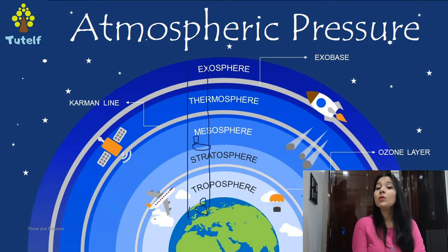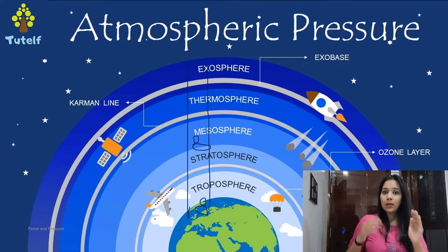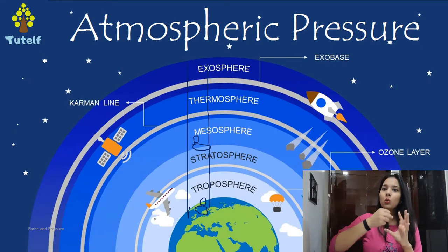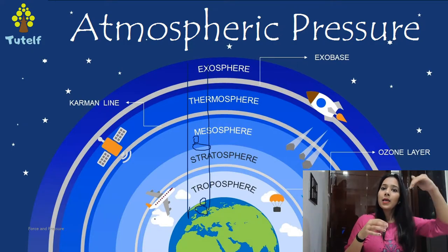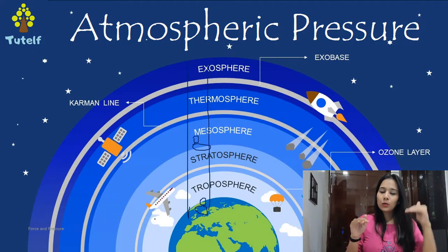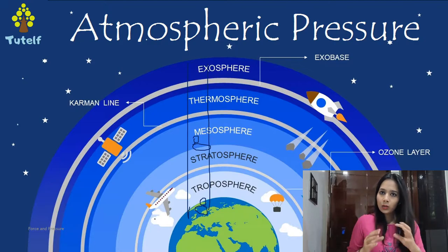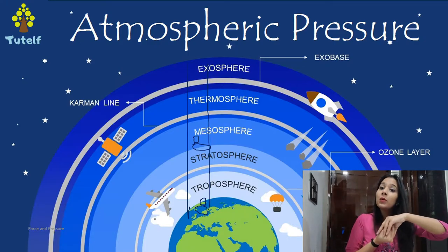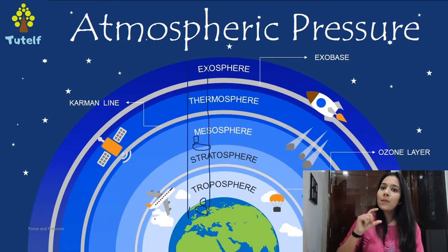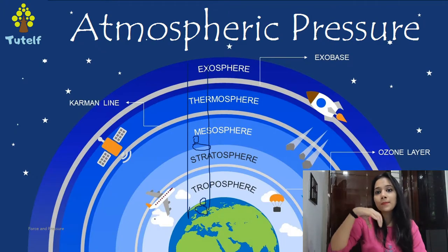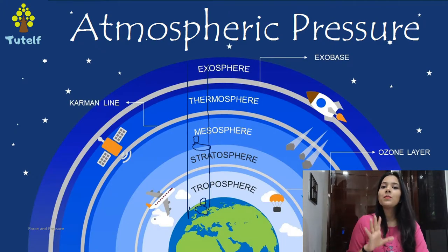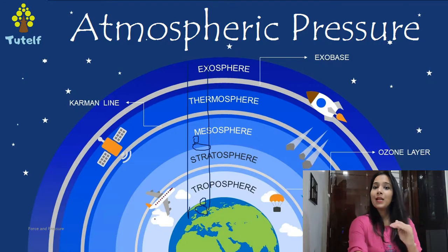Now, how do we determine the value of atmospheric pressure? We take a beaker, we put mercury in the beaker, and we put an inverted tube in it. What happens is that the atmospheric pressure forces the mercury to rise — we call this the Torricelli experiment. The level of mercury in the inverted tube tells us the atmospheric pressure outside. The level is 760 mm.